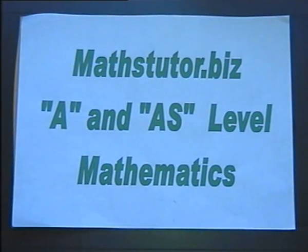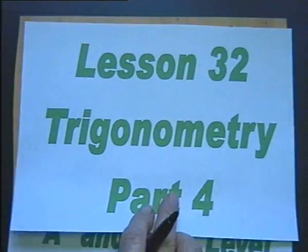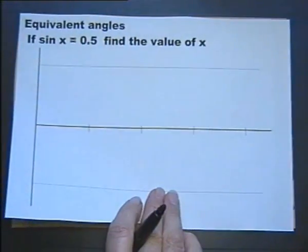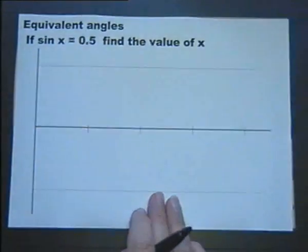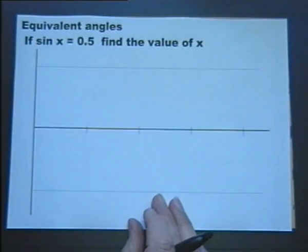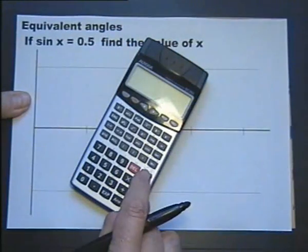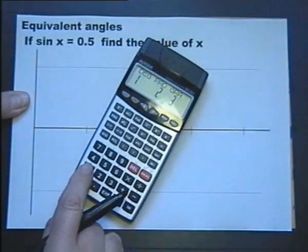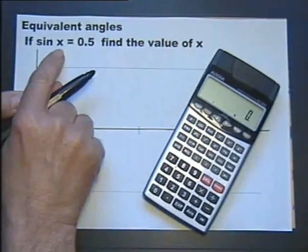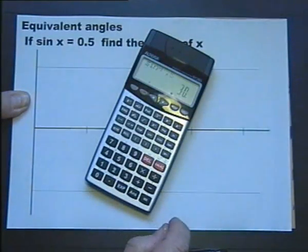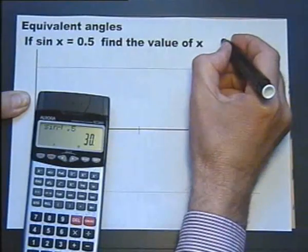A and AS Level Mathematics Lesson 32, Trigonometry Part 4. We're looking at equivalent angles. If sine of x equals 0.5, find the value of x. For that we need a calculator working in degrees, so let's make sure it's in degree mode. Let's do inverse sine of 0.5, which gives an answer of 30 degrees.